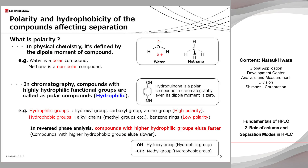In addition to the words hydrophobic and hydrophilic described in the previous slide, this slide describes another word: polarity. What does the polarity of a compound mean? In physical chemistry, it is defined by the dipole moment of a compound, and dipole moments occur due to the localization of electrons. Water is known as a polar compound because oxygen and two hydrogen atoms form angled bonding that generates a strong dipole moment. By contrast, the symmetric steric structure of methane affords zero dipole moment, resulting in non-polar property. However, in the world of chromatography, hydroquinone is a polar compound even though its dipole moment is zero. This is because hydroquinone has two hydrophilic hydroxyl groups. Because hydrophilic compounds have high polarity, it is common to call them polar compounds.